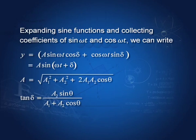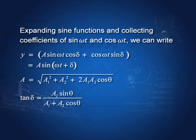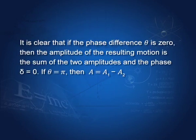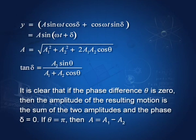The phase of the composite oscillation is given by tan δ = a₂ sin θ / (a₁ + a₂ cos θ), where θ is the initial phase difference. If θ = π, then cos θ = −1 and sin θ = 0, so δ = 0 and a = a₁ − a₂. That is, if two SHMs have a phase difference of π, the amplitude of the composite oscillation is simply the difference of the two amplitudes.